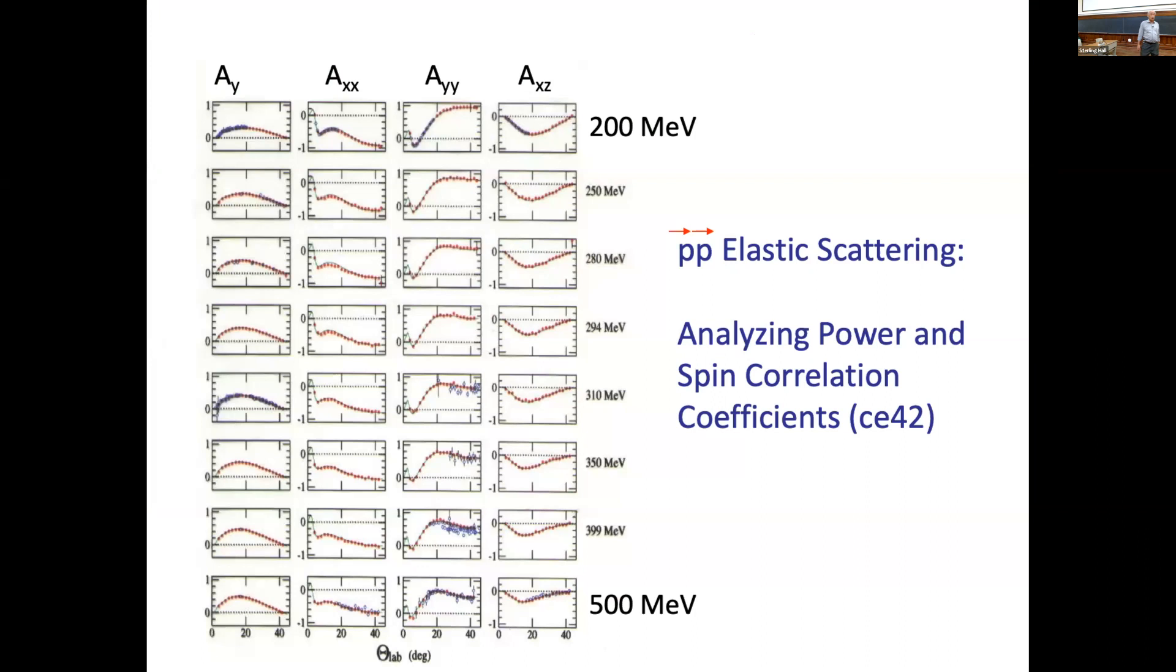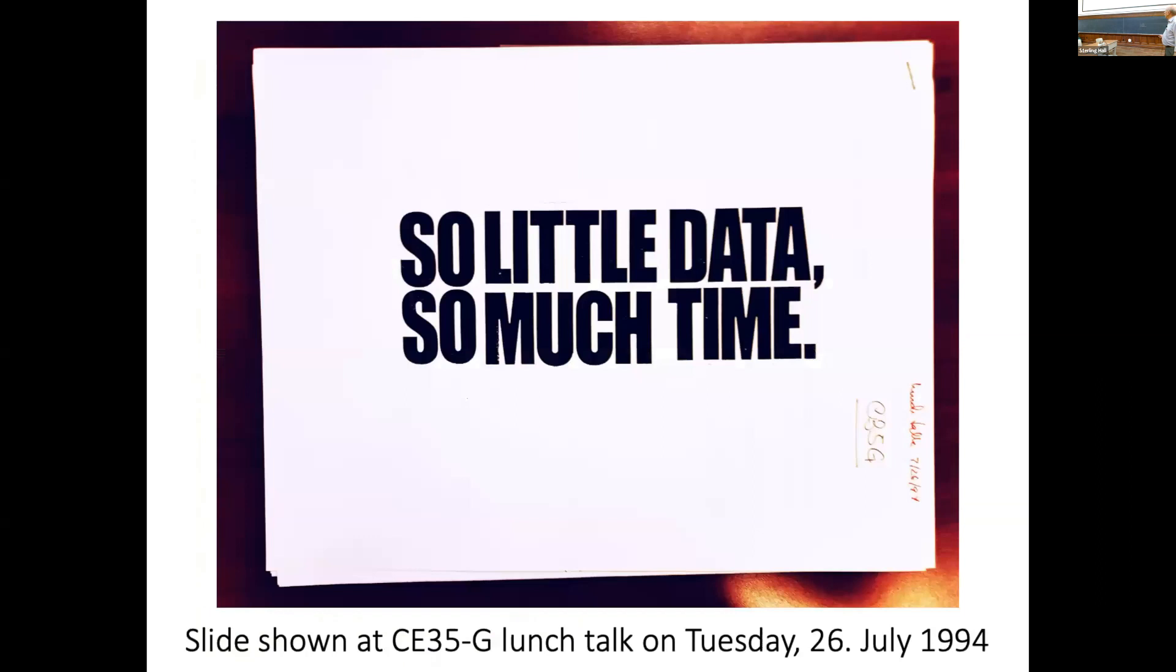This is an example from a publication which shows the measurement of all measurable polarization observables over the entire angular range, from 200 MeV to 500 MeV in proton-proton elastic scattering. Previous available data are shown with these blue points, and the red dots here with the error bars are not visible because they're way too small to be shown on this scale. This was one publication of one measurement.